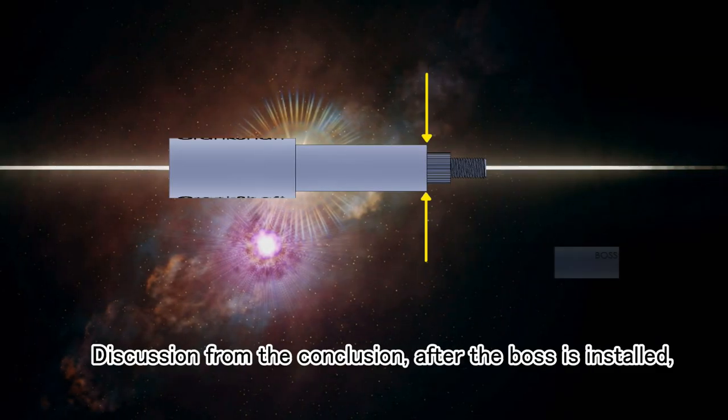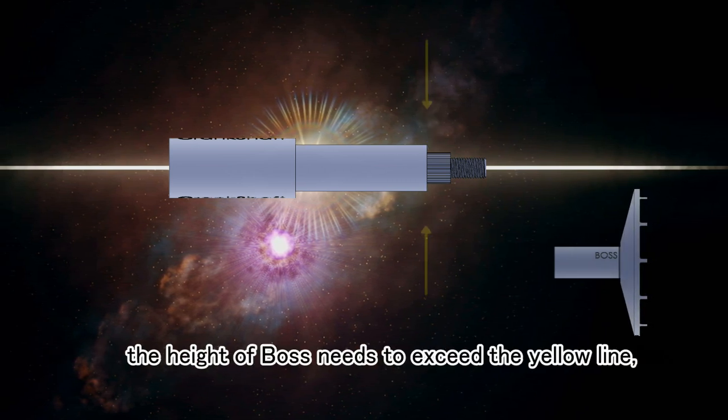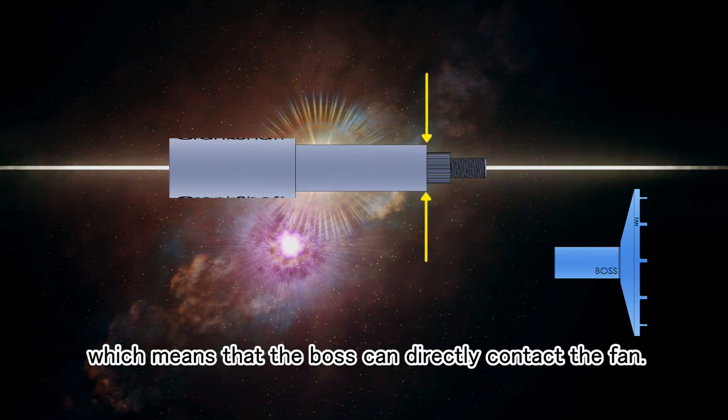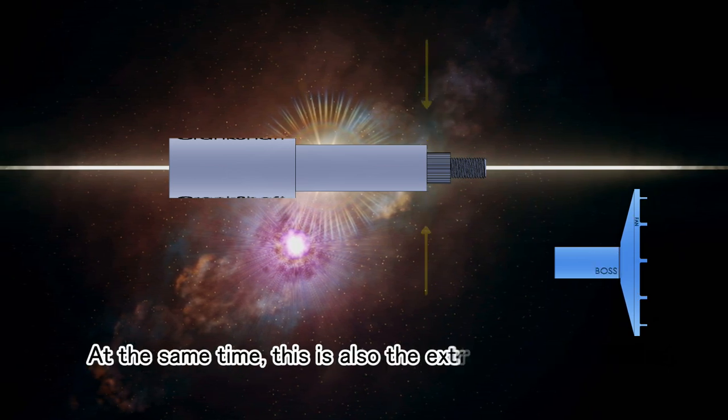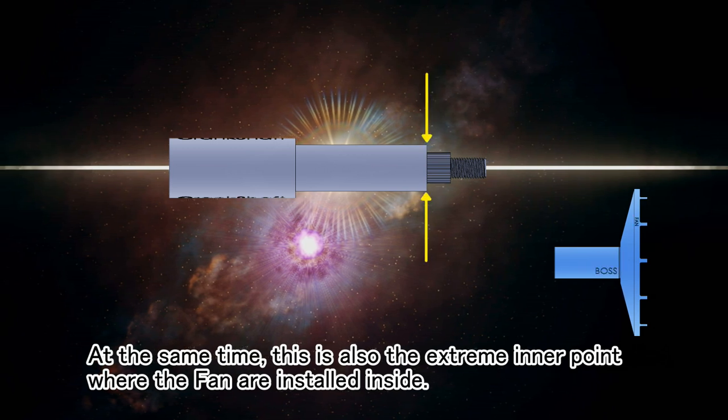Discussion from the conclusion: after the boss is installed, the height of boss needs to exceed the yellow line, which means that the boss can directly contact the fan. At the same time, this is also the extreme inner point where the fan is installed inside.